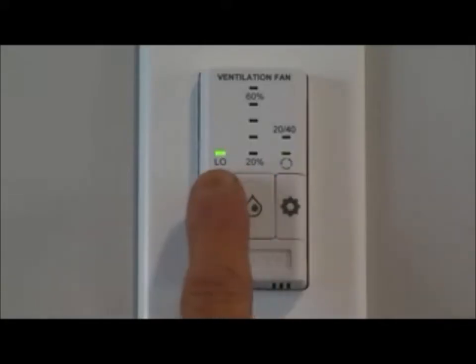To turn it off, you hit it once. When you are in this position with the low indicator highlighted, what we are doing is running the HRV at a low speed ventilation rate consistently. So it's constantly working 24 hours a day, 7 days a week, bringing in fresh air at a low speed rate.